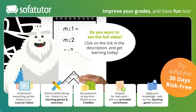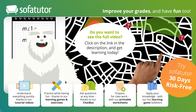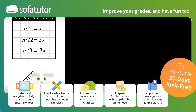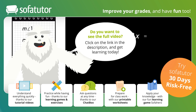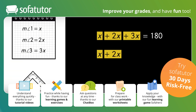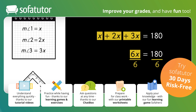We have one more triangle left. The second angle is twice as large as the first angle, so we call angle 1 x and angle 2 equals 2x. The third angle is 3 times the size of the first angle, so 3x. This gives us the linear equation x plus 2x plus 3x equals 180. Combining like terms gives us 6x equals 180. Dividing both sides by 6, we get x equals 30.